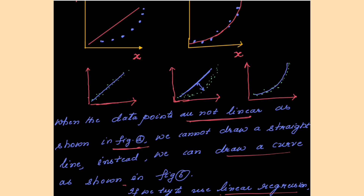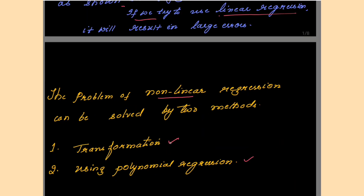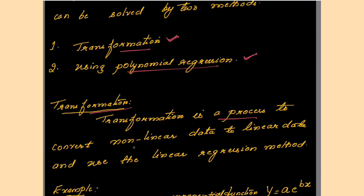When you draw a curve, the type of model resulting from it becomes a polynomial regression model. Actually, you can solve a non-linear regression problem either by transformation or polynomial regression. This session is about polynomial regression, but you should also know what you can do using the transformation method.